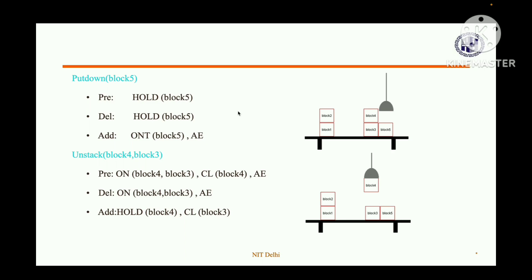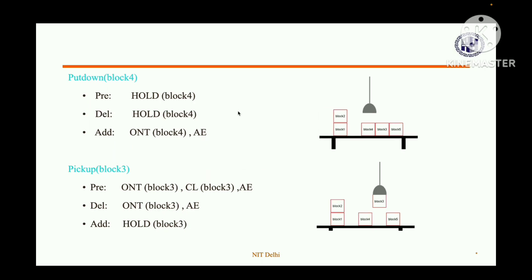Next, unstack block four from block three. Precondition: block four is on block three and block four is clear. Delete condition: block four is on block three. Add list: robotic arm holds block four and block three is clear. Then, put down block four on the table — precondition, delete condition, and add list follow similarly, resulting in block four on the table and block three cleared.